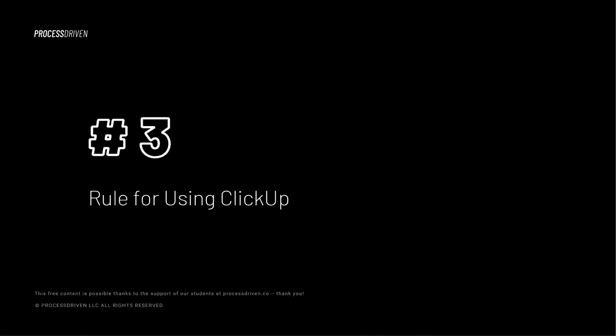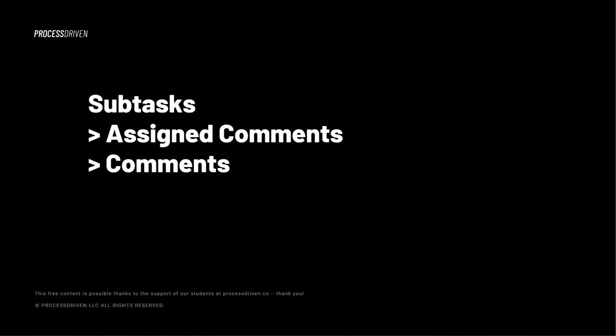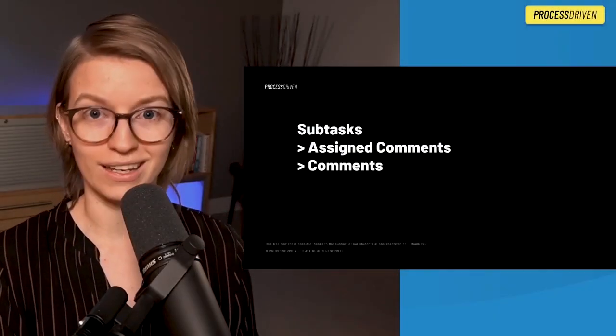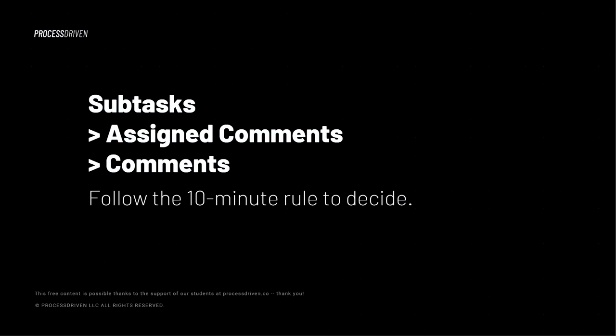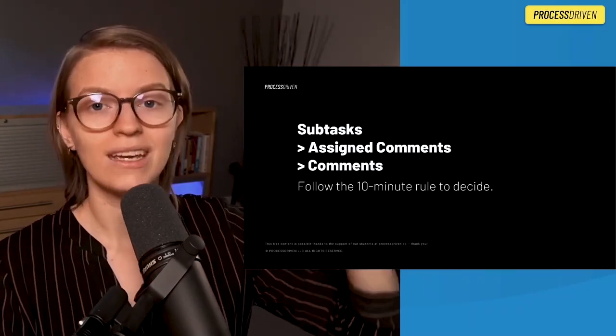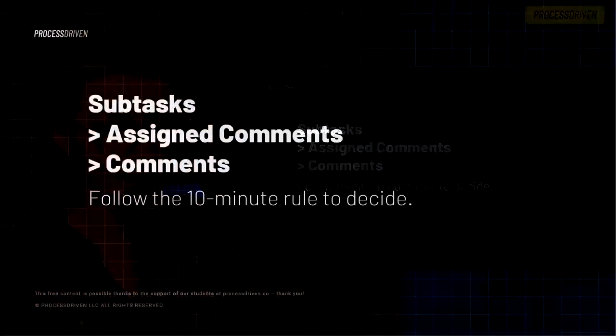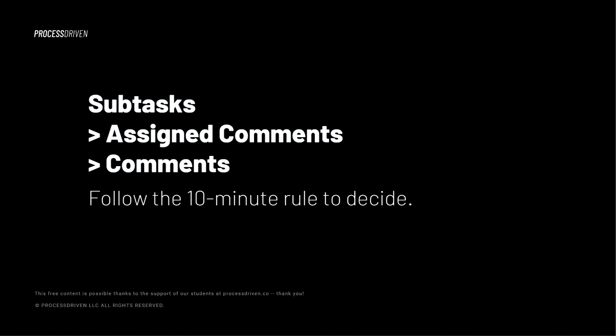Rule number three: subtasks are greater than assigned comments, which are greater than comments. Know what the difference is and stick to it. A comment is just an FYI. If that comment also has an action required, it needs to be an assigned comment. And if that assigned comment will take more than 10 minutes for someone to reasonably do, skip the assigned comment and make a subtask instead. That is my own personal rule — you might customize this for your own organization. By default, everything new you're creating should start off as a comment, and if it requires action on someone else's part, assign that comment. If that action takes more than 10 minutes, it should become a subtask.